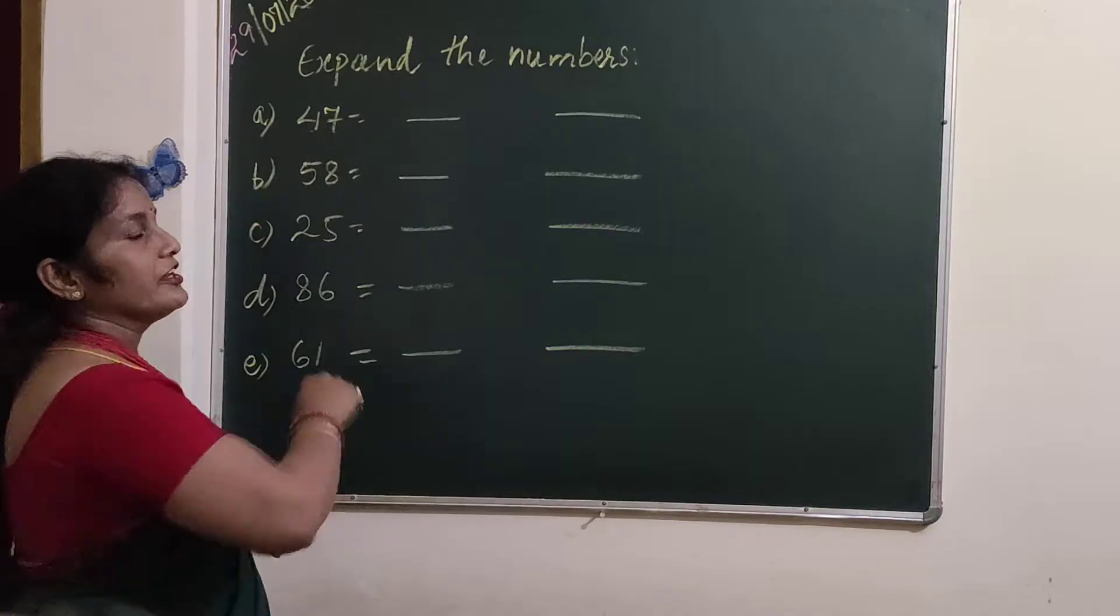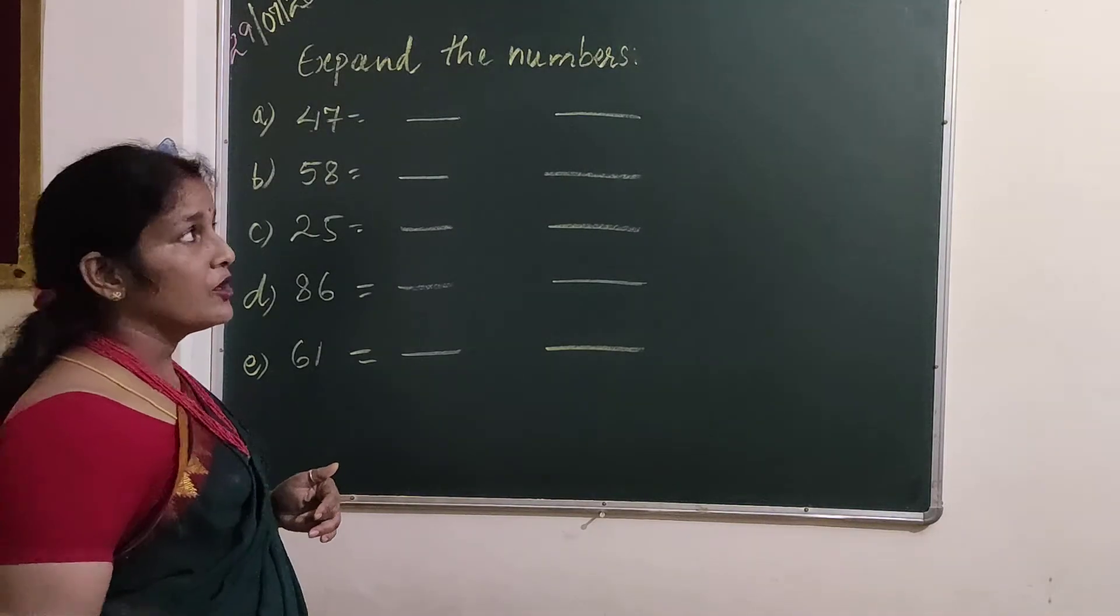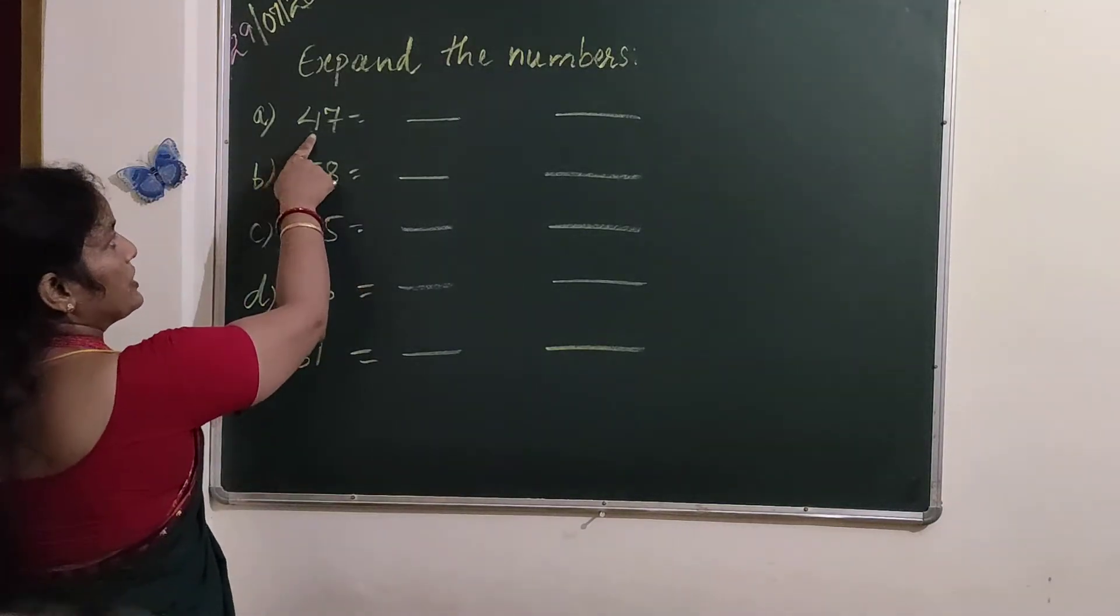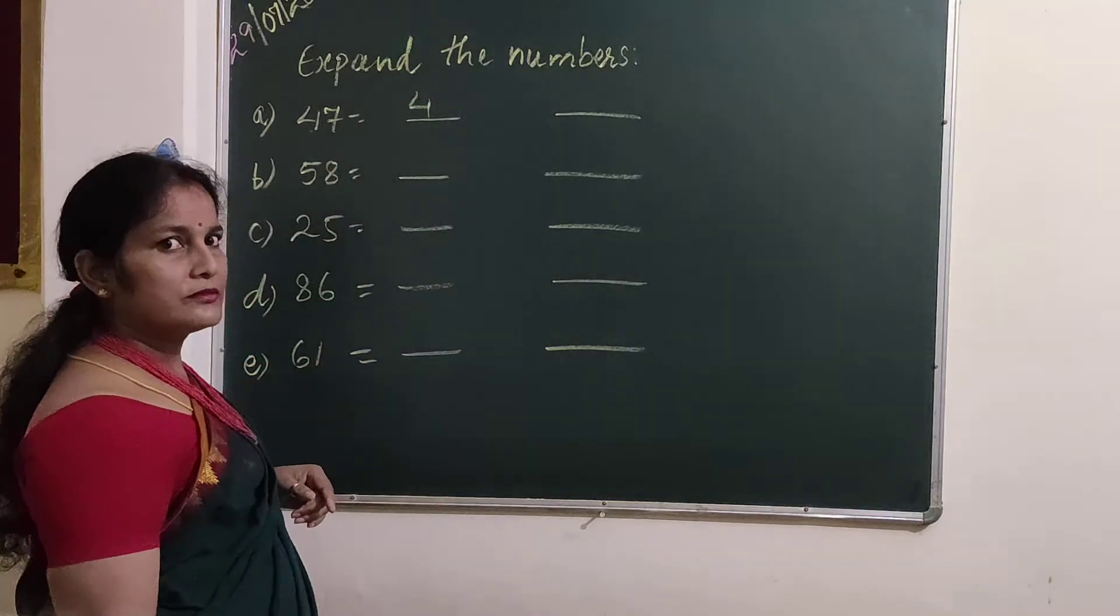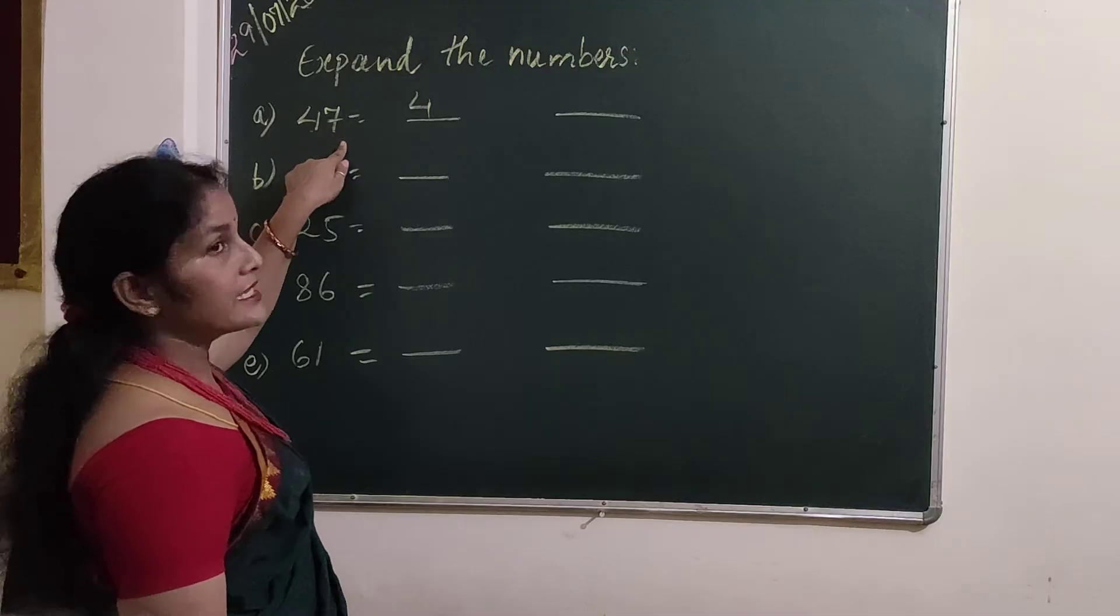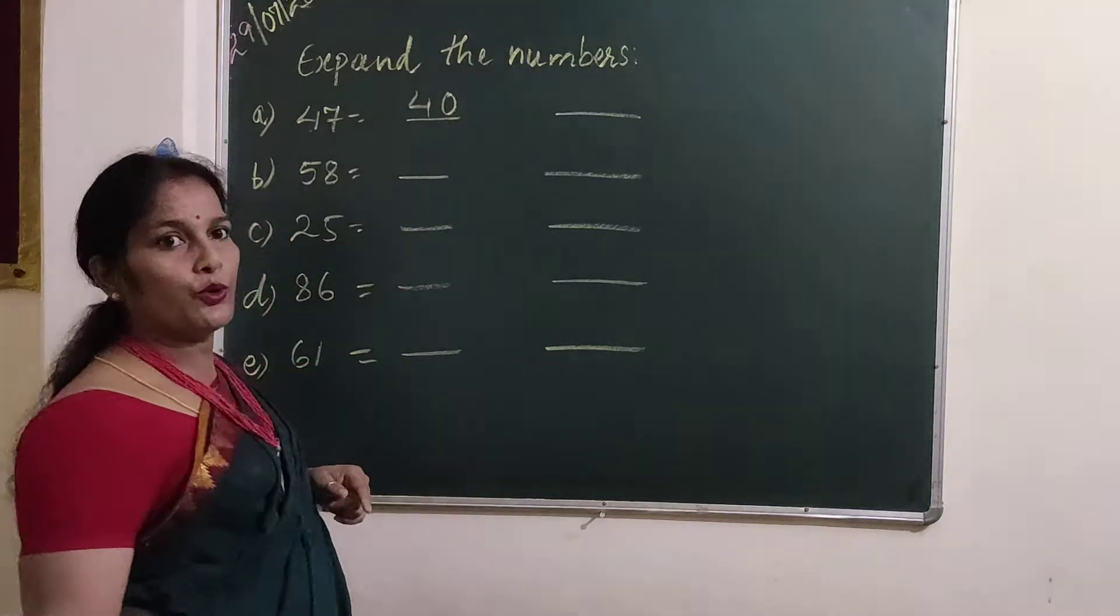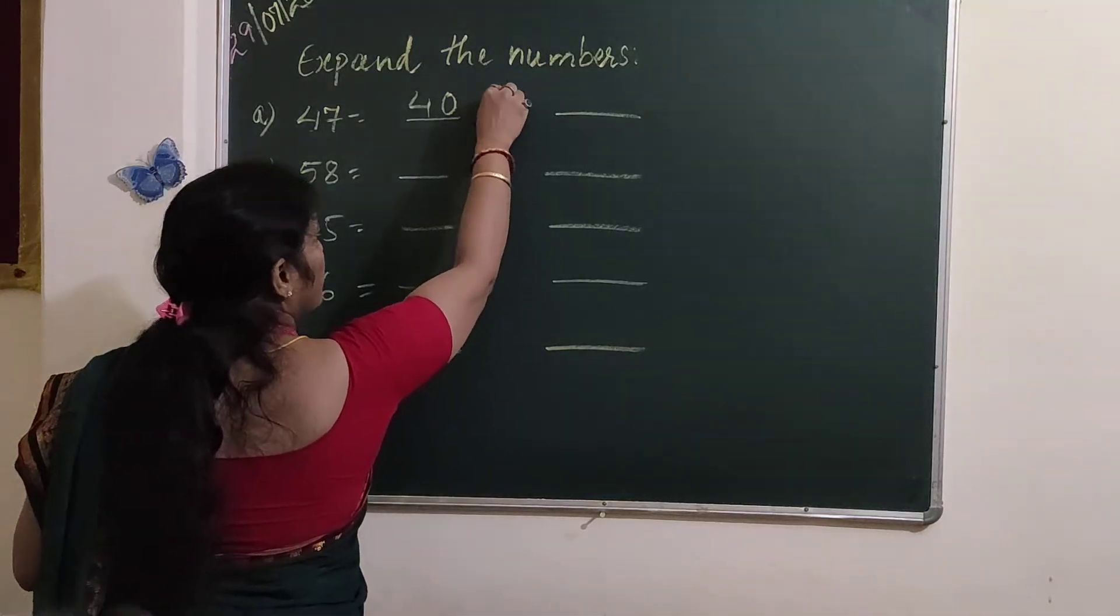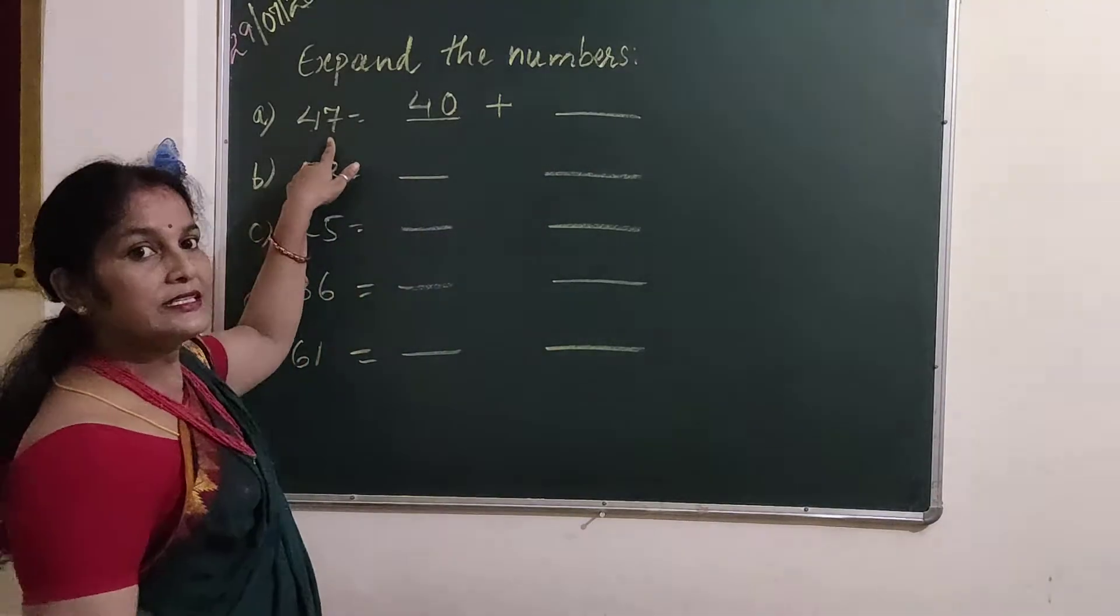So which number is given here? 47. How will you separate? What is this? You will write first 4. 4 and 7? No. 4. After that, what is this? 7. Instead of 7, we have to write 0. And here will be plus sign. And after that, this 7.